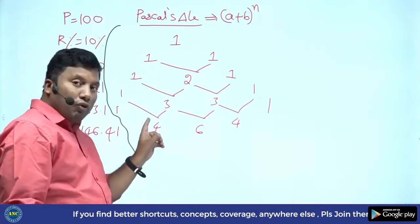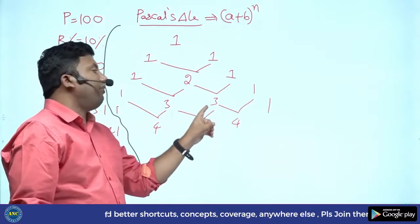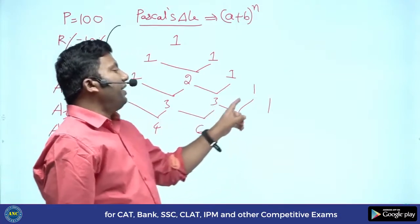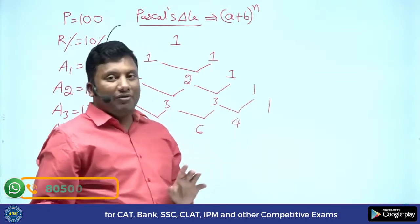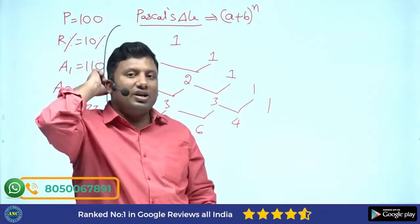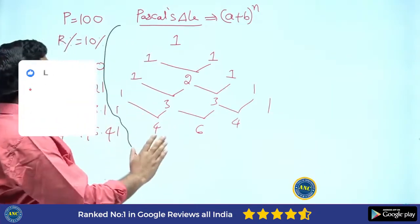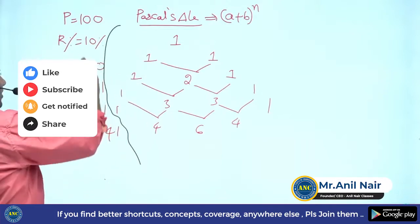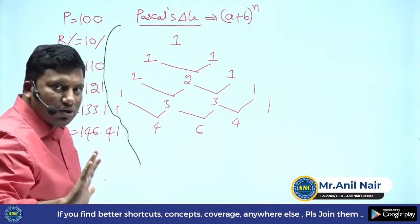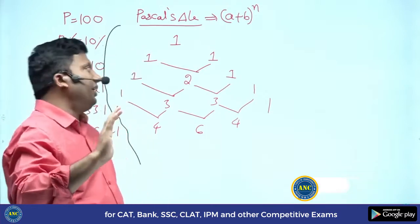This is (a + b) power 4: a power 4, 4a cubed b, 6a squared b squared, 4ab cubed, and b power 4. Pascal's triangle is actually used to determine the coefficients for (a + b) power n — it is the same values we are getting. I hope the idea is clear.